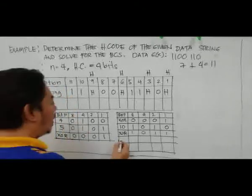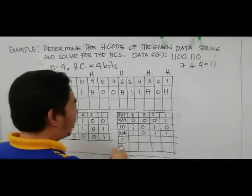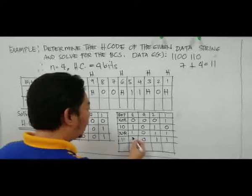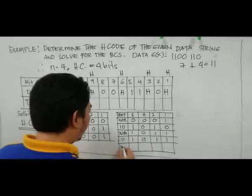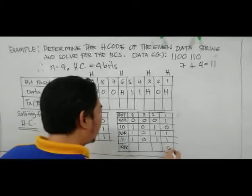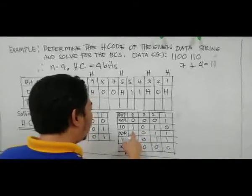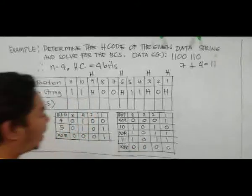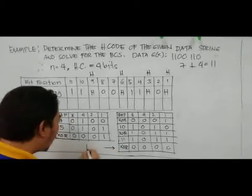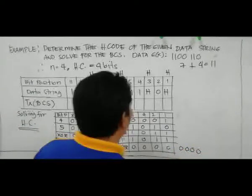The last bit position with a 1 is bit position 11, which equals 8 + 2 + 1, giving binary 1011. XOR again: 1 XOR 1 = 0, 1 XOR 1 = 0, 0 XOR 0 = 0, 1 XOR 1 = 0. Therefore our Hamming code result is 0000.